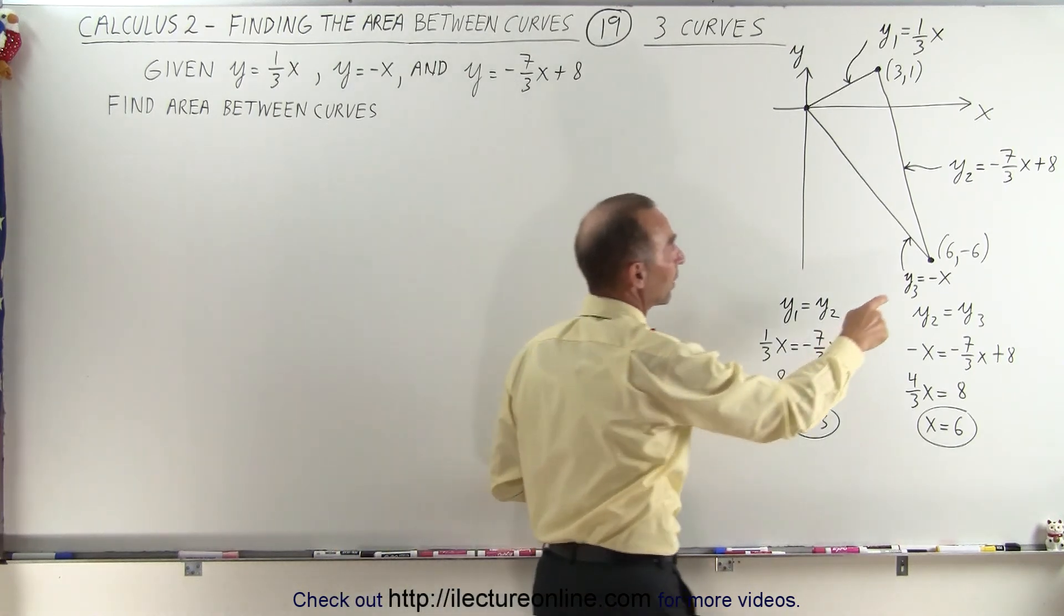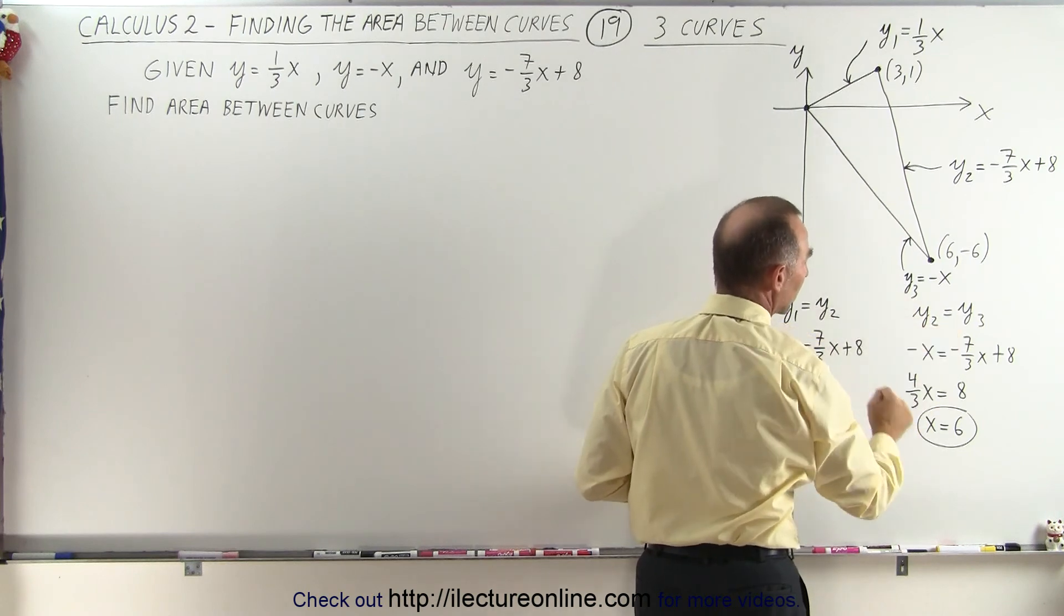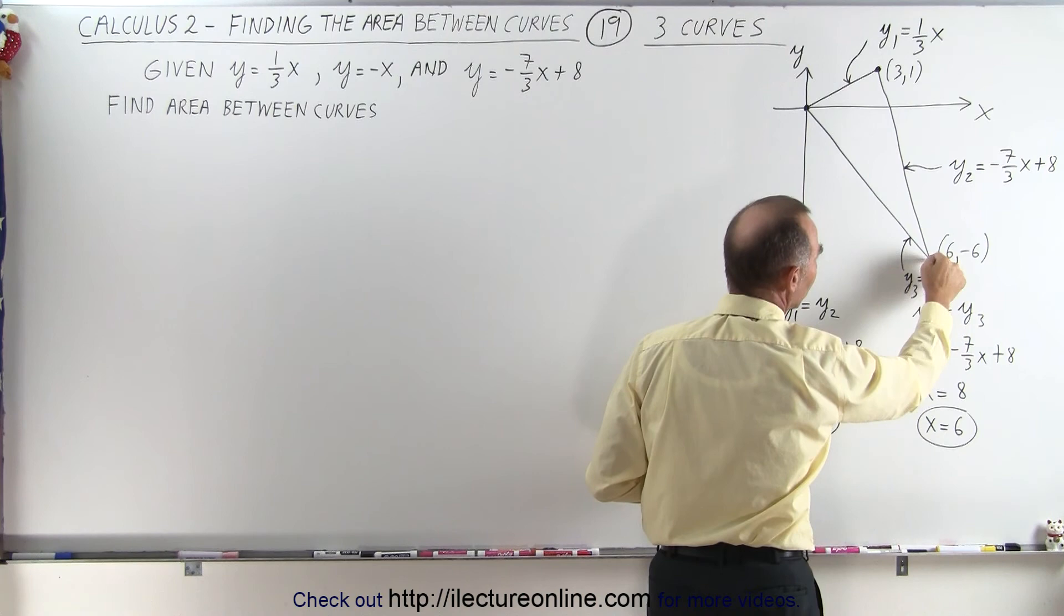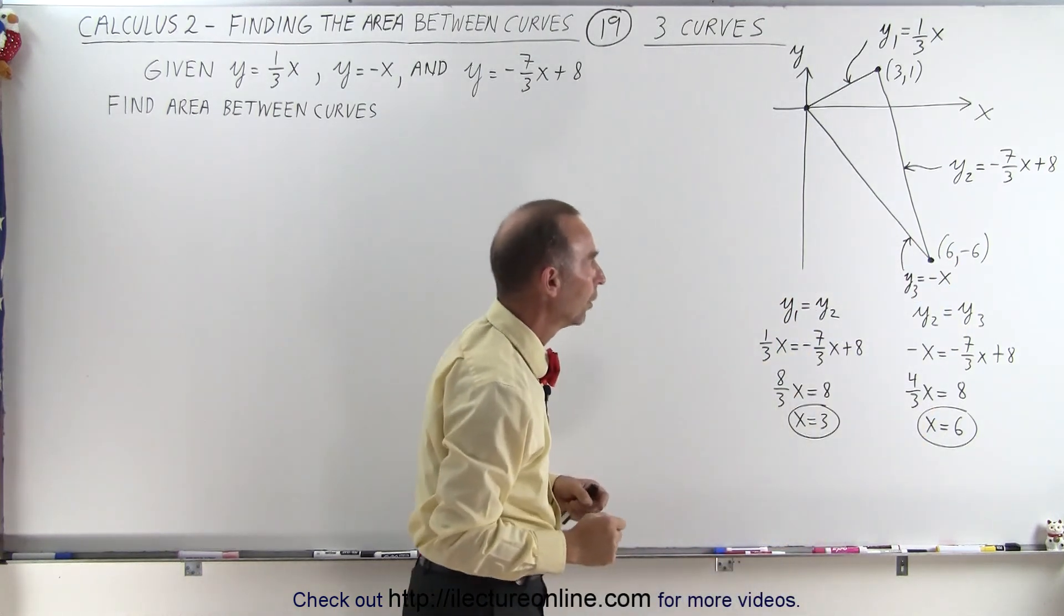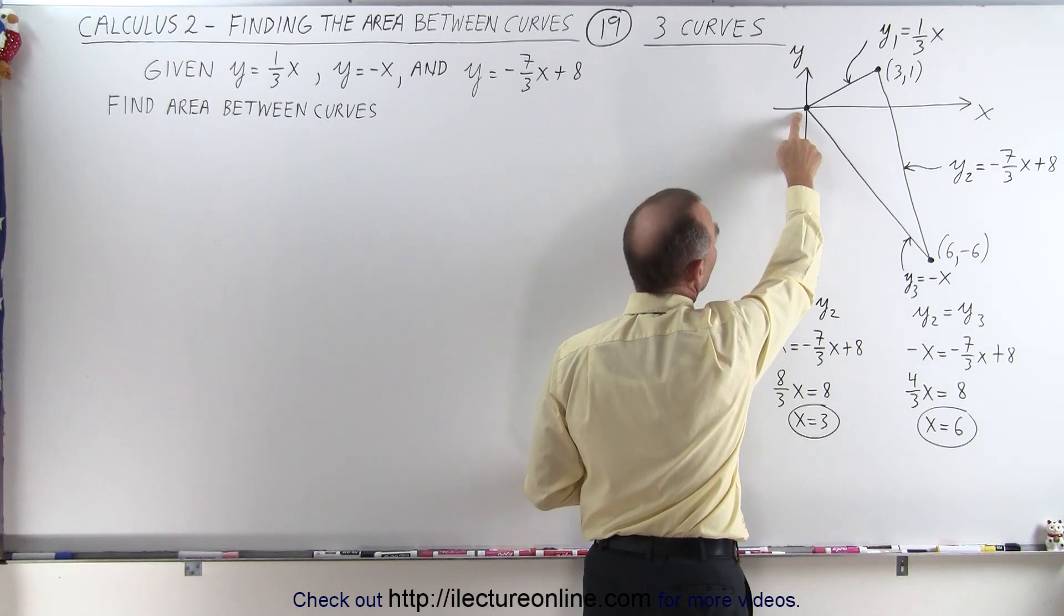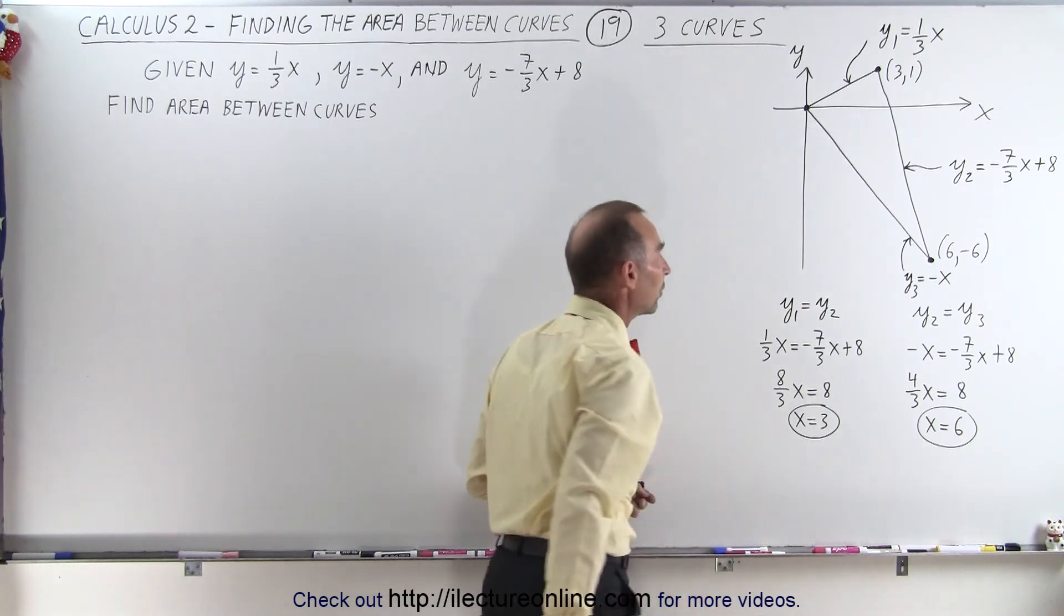And then to find this point where these two lines meet, we set y2 equals to y3, we solve for x, x equals 6, and that means that y equals -6 at that particular location. Also, we notice here that they also meet at the origin when x and y are equal to 0, that's when y1 equals y3.